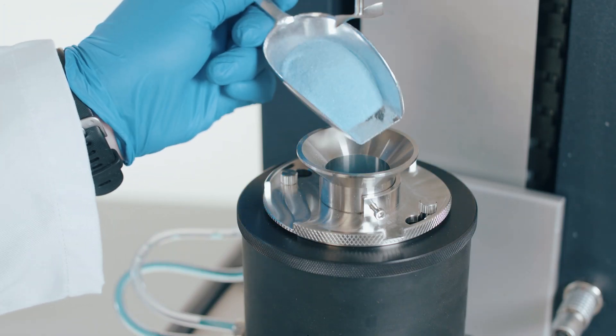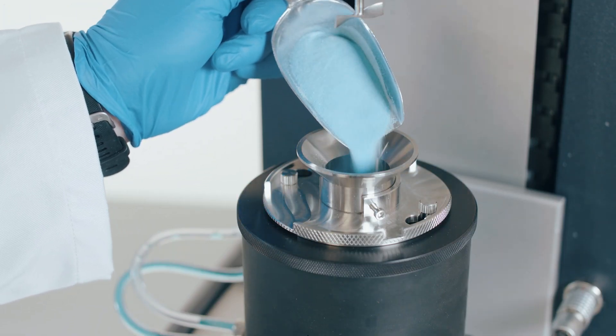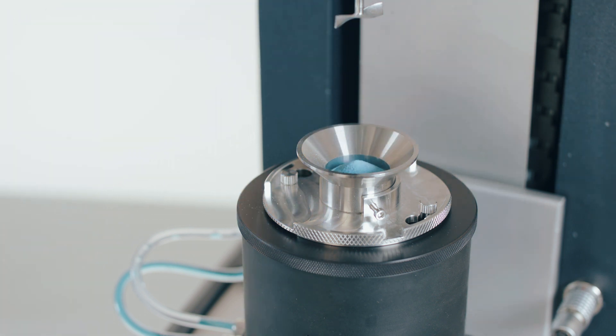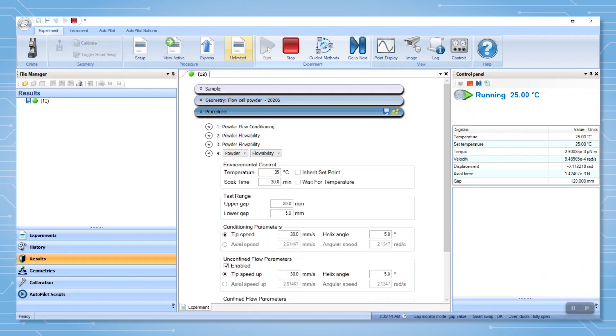Powder is loaded into the cell above the cup but below the top of the funnel neck, thus ensuring that the powder is neither underfilled nor overfilled. Start the test from the instrument or the software.